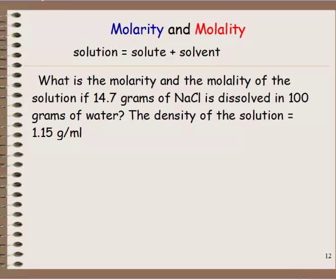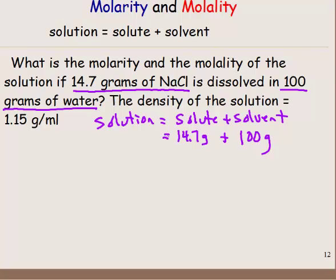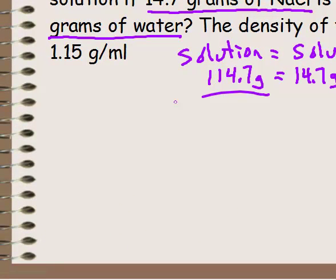What is the molarity and the molality of a solution that has 14.7 grams of NaCl dissolved in 100 grams of water? The easiest way to solve these is to write down: solution equals solute plus solvent. The solute is 14.7 grams of NaCl, the solvent is 100 grams of water, so adding them gives 114.7 grams of solution.